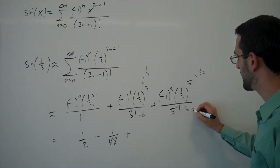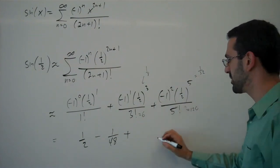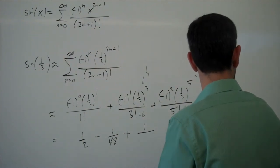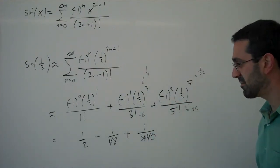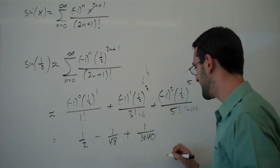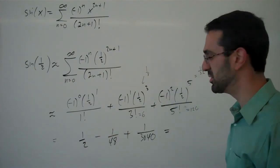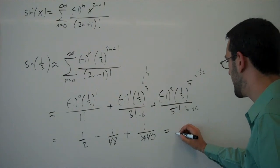Here one half to the 5th is one 32nd. 5 factorial is 120. If I multiply those, I'll get 1 over 3840 there.